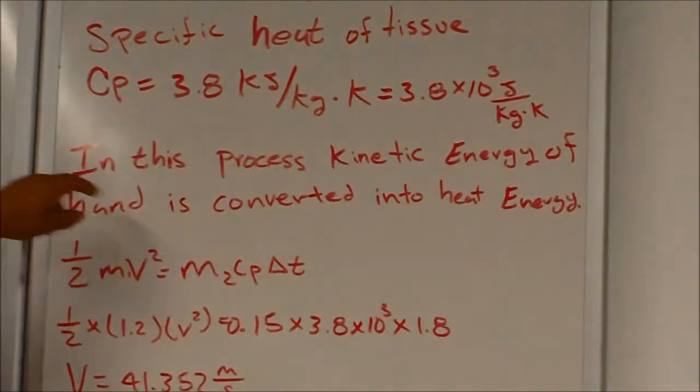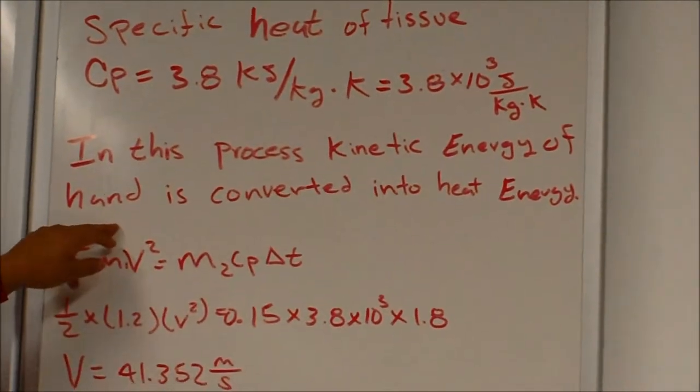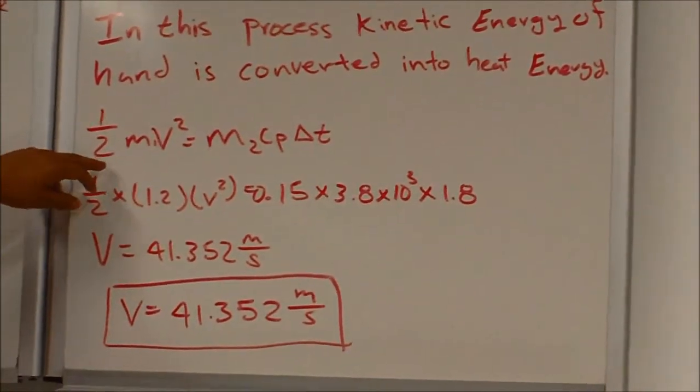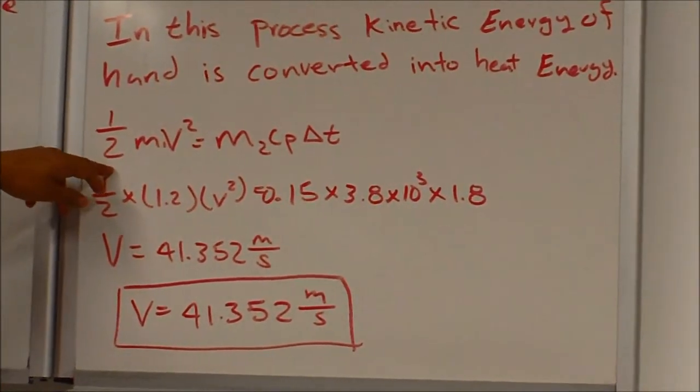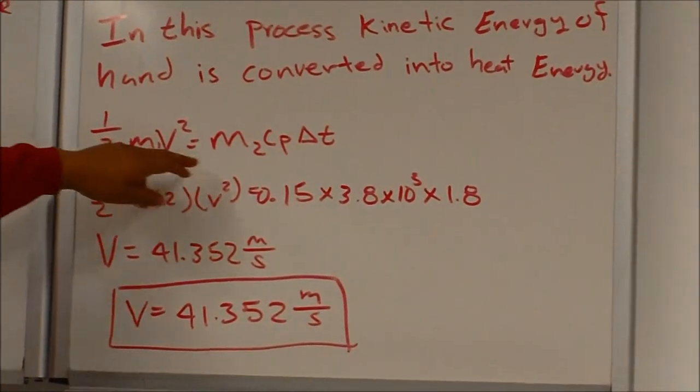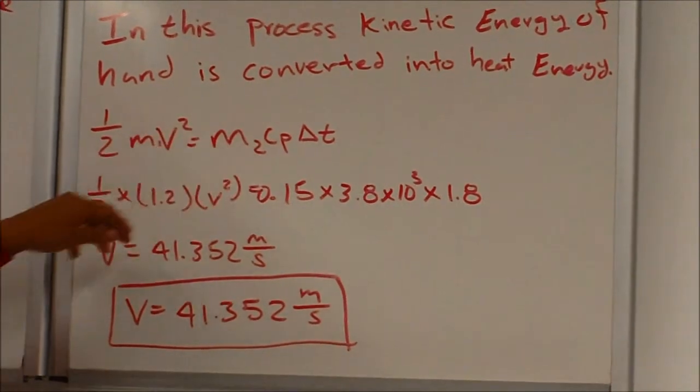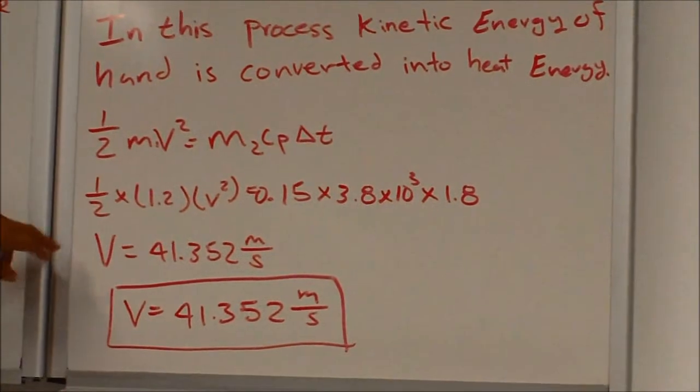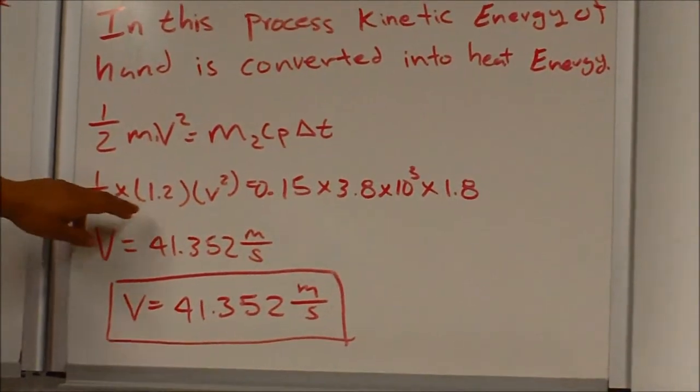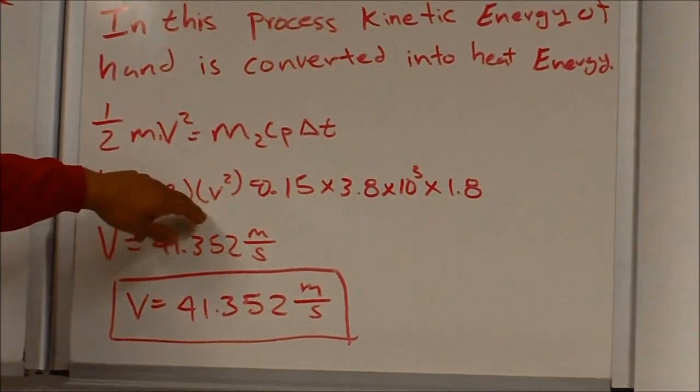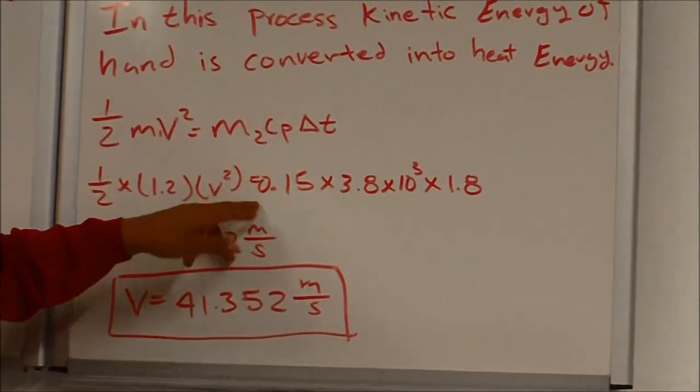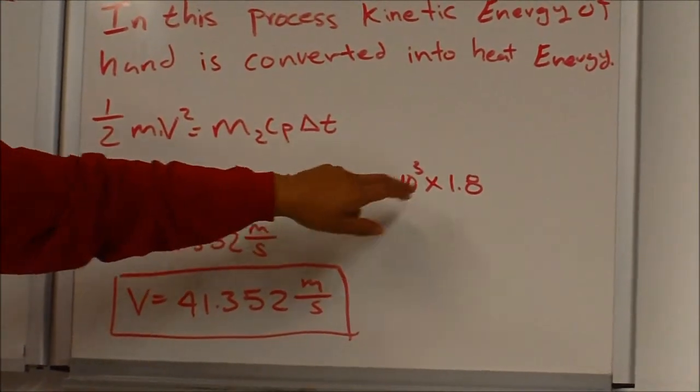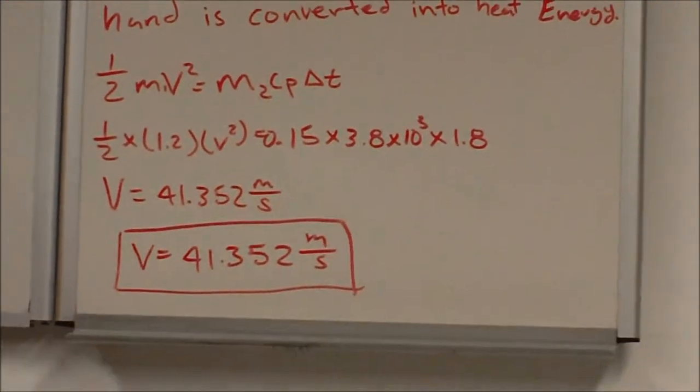In this process, the kinetic energy of the hand is converted into the heat energy. So our equation is 1 half mv squared equals mCp delta t. And again, we just plug in our givens. A half times 1.2 v squared which equals 0.15 times 3.8 times 10 to the third times 1.8.